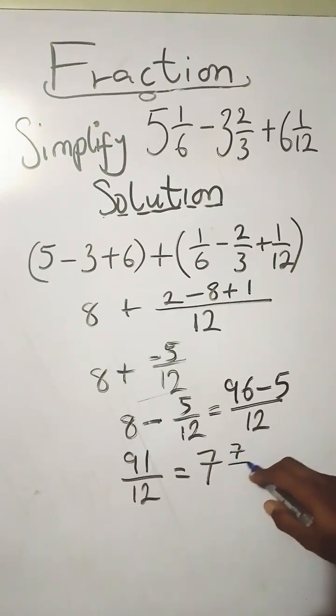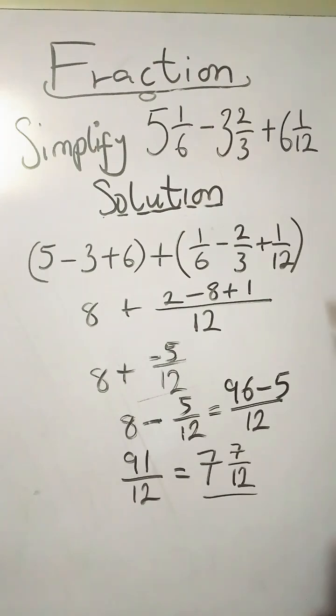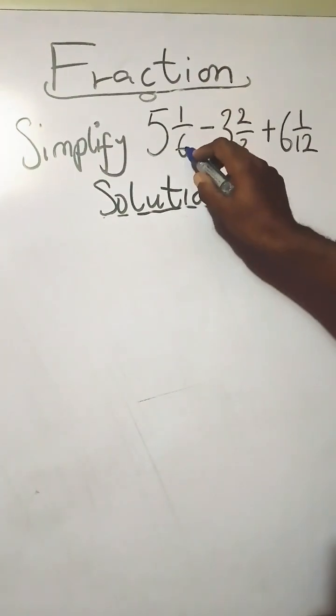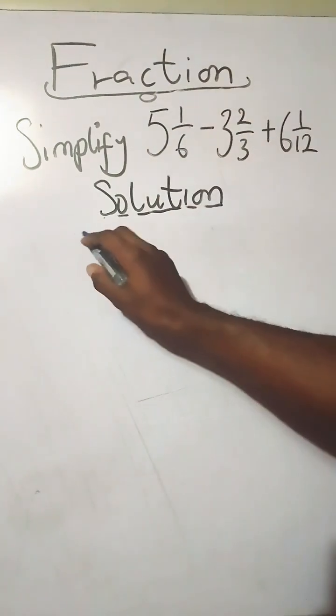Now over to the second method. This will be done by making each of the mixed numbers a single fraction. 6 times 5 you have 30, plus 1 gives you 31 over 6. Minus 3 times 3 is 9, plus 2 is 11 over 3.